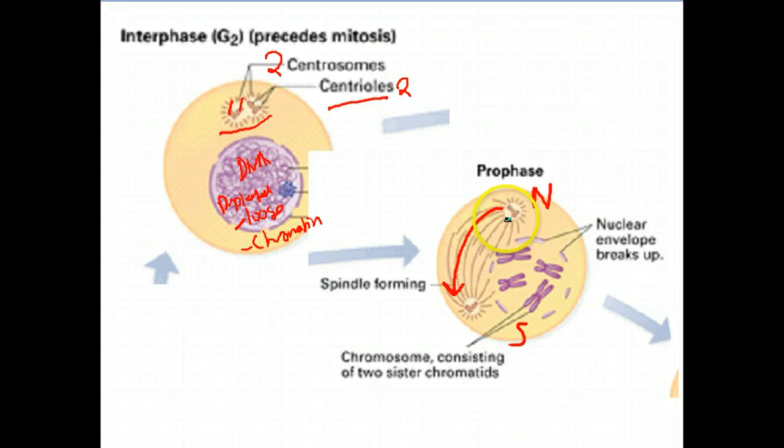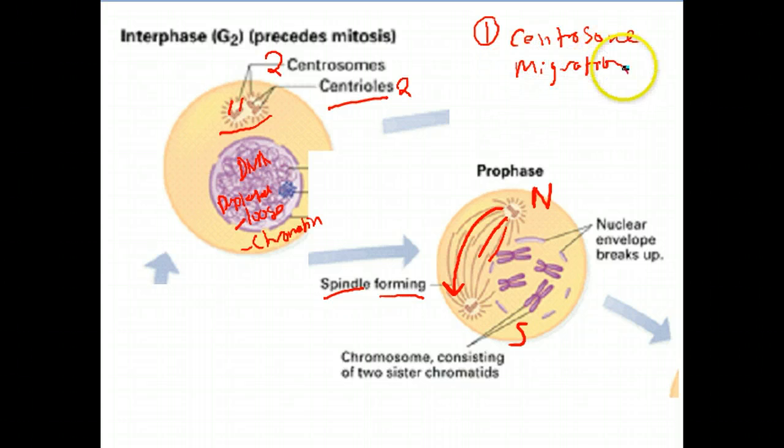You can also see at this point that these little strands here, what we call spindles, are starting to form. So you have spindle formation, spindle fiber formation. That will be important as we progress in mitosis. So you'll see that in a minute. So the first thing is centrosome migration with spindle formation. This is something you see in this first step of mitosis, this transition from interphase to prophase.